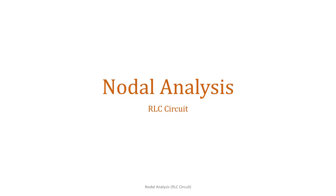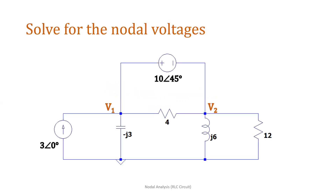Today we'll be having nodal analysis involving RLC circuits. Solve for the nodal voltages. First, we need to get the number of nodes. We have one, two, three — so we have three nodes. But the third node is the reference node connected to ground, so we don't need to solve for it. We just need to get the values of the nodal voltages at node 1 and node 2.